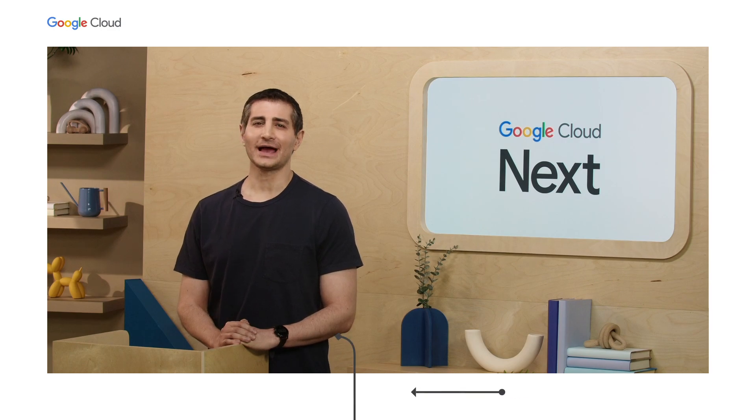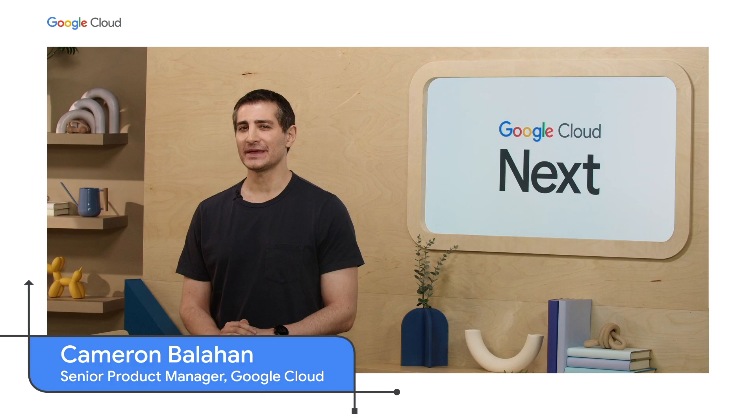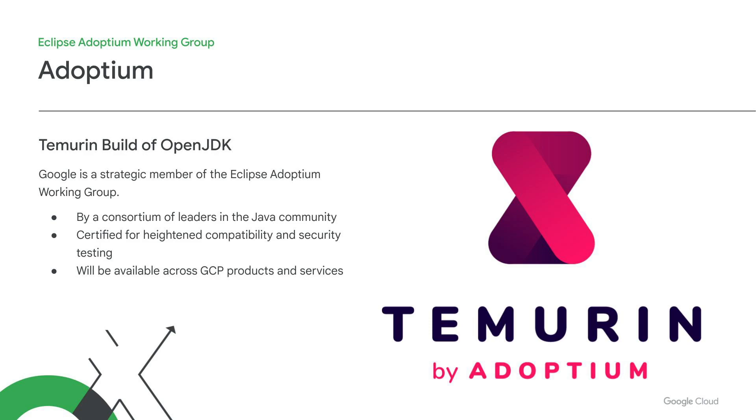I'm Cameron, Product Manager at Google Cloud. We're committed to making Google Cloud the best cloud for Java developers. That includes the products and integrations you just saw and extends even further to your core Java tools and even your runtime. To that end, I'm pleased to announce that Google has joined the Eclipse Adoptium Working Group, a consortium of leaders in the Java community and makers of the Temurin build of OpenJDK. Temurin is one of the world's most popular JDK distributions, certified by Adoptium for heightened compatibility and security testing. As a member of Adoptium, Google will make Temurin available across GCP products and services, providing Java customers the highest standard of enterprise security and more opportunities to create integrated, security-focused solutions. We're excited for you to try it out.